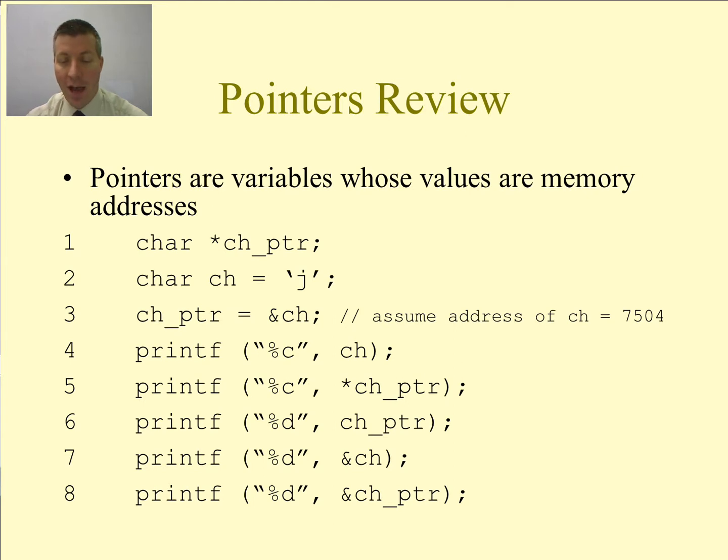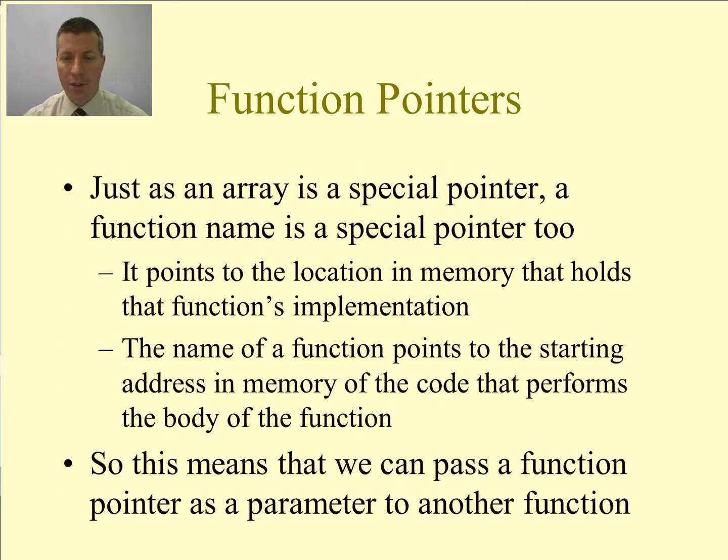On line 7, I print out the address of CH, which is also 7504. And on line 8, I don't know what this is going to print out. It's the address of CH Pointer. All that I do know is it will not be 7504. Hopefully this is just a review. We've covered a similar slide to this in the last few lectures. So hopefully this makes sense to you now.